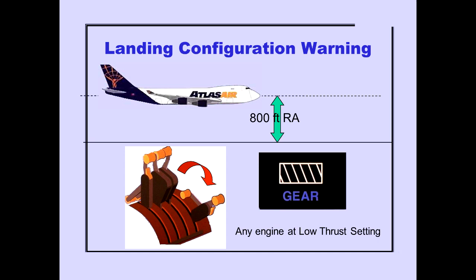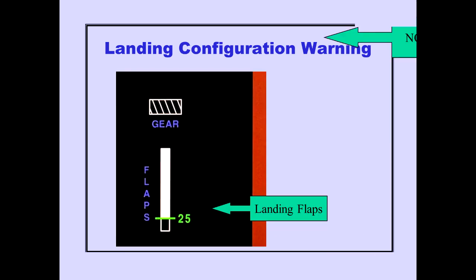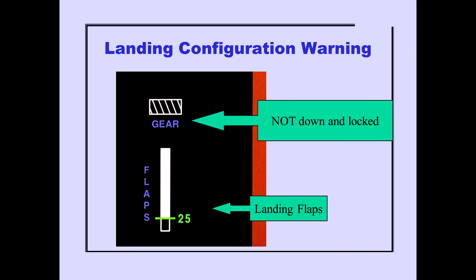Two conditions activate the warning. The first condition is radio altitude less than 800 feet with any engine at a low thrust setting and the gear not down. The second condition is any time that landing flaps are selected with the gear not down.